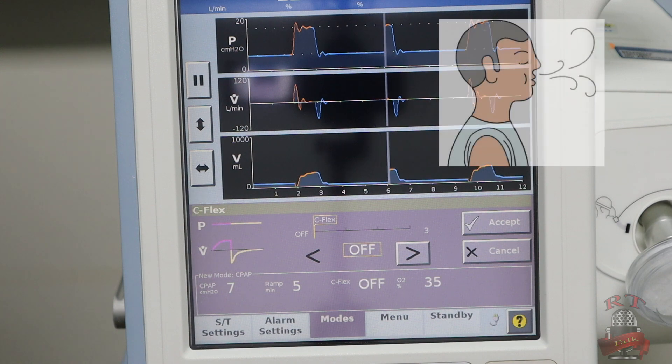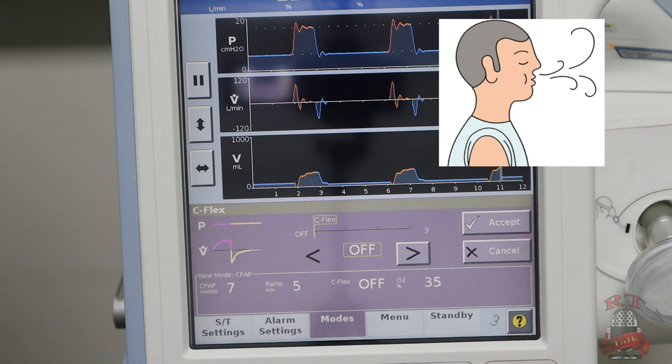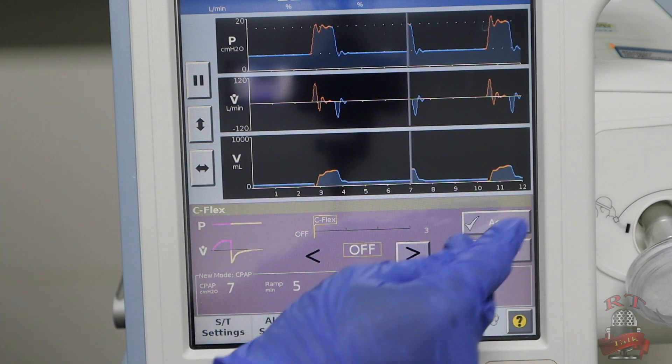When the patient is exhaling, the CPAP pressure will go a little bit down, so it will let him exhale with no hard time. But if you are handling an acute patient, you will just keep it off.